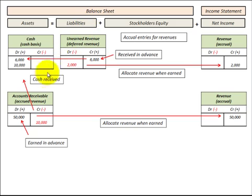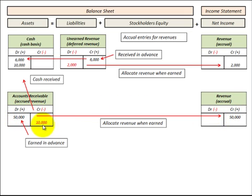If we look at the asset account, that would be accounts receivable. This is where we earn revenue in advance of receiving payment — we've provided something to our customer. At that time, we debit our accounts receivable and immediately recognize it on our income statement by crediting or increasing our revenue account.